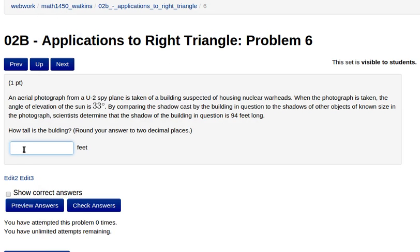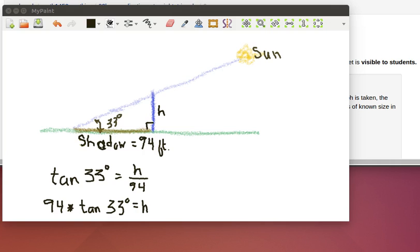So we can calculate that height by putting into this equation the 94 times the tangent of 33 degrees. So we can follow along with what's happening. Let's look at that picture again.